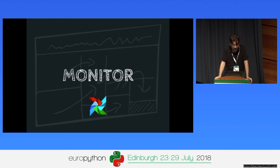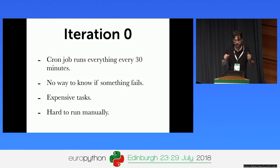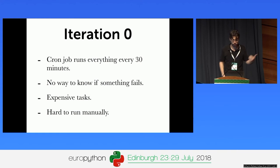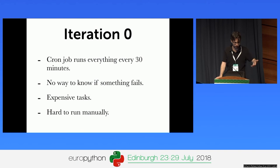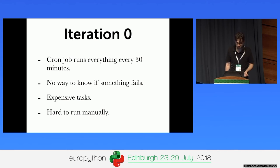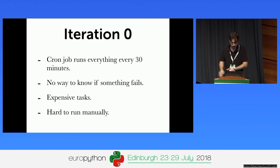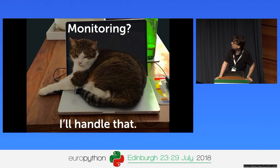Until then, this all runs on my computer and on production servers, but iteration zero had issues. A cron job was running everything every 30 minutes. When something failed, you could potentially know via Kubernetes cron jobs, but you'd need to check manually. Some expensive tasks were running every 30 minutes and it was hard to run tasks manually — you had to export the job, reschedule it into the scheduler, then eventually delete it.